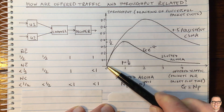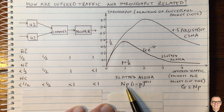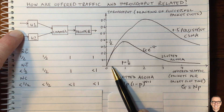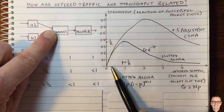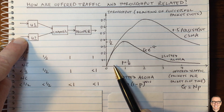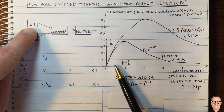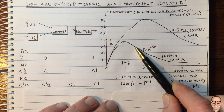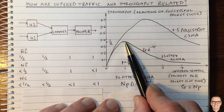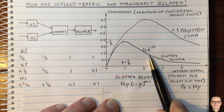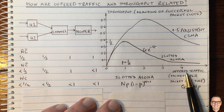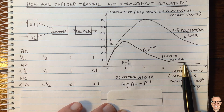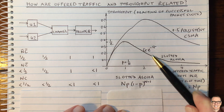Why does the curve go up and then come down again? If you're offering traffic at a very low rate, there won't be very many collisions. You can start increasing that offered traffic rate and you won't get too many collisions — almost all new packets come through and your throughput starts going up. But you reach a point where collisions start occurring, causing throughput to come back down. The more offered traffic, the more collisions, and the more the throughput falls.